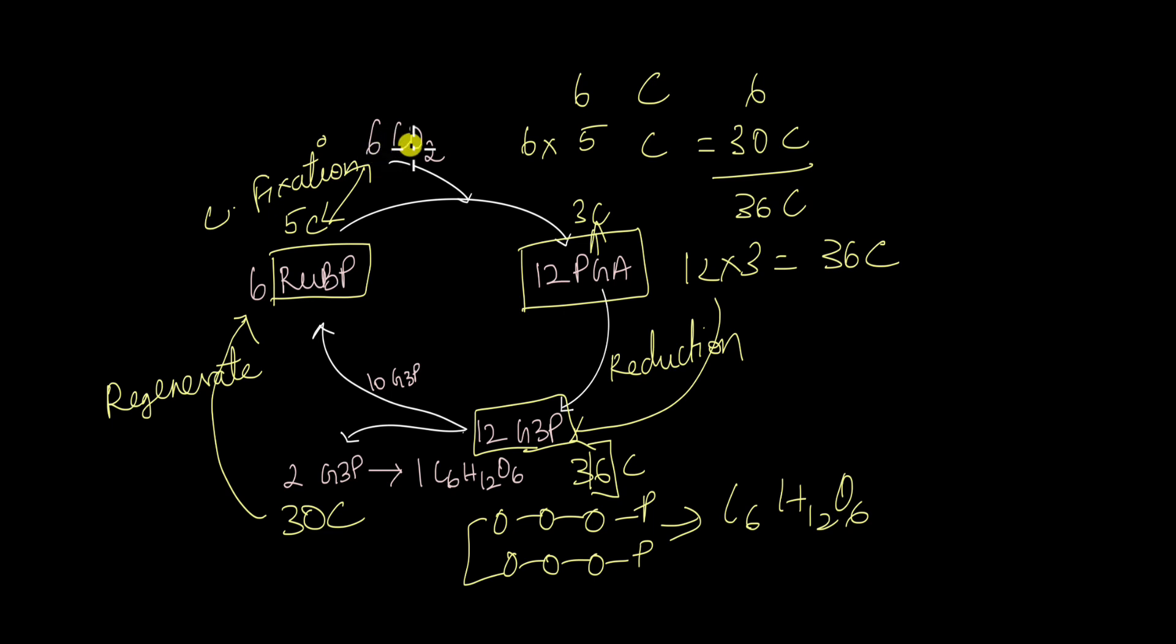Six molecules of carbon dioxide combining with six molecules of RUBP to give 12 phosphoglyceric acid molecules. And they are converted to 12 molecules of G3P out of which two molecules go ahead to form one glucose molecule. And the remaining 10 G3Ps are used to regenerate this six molecules of RUBP. We're finally ending up with 30 carbon atoms here. 10 into 3 is 30 to give back this six RUBP molecules. And this is the entire Calvin cycle reaction that involves converting carbon dioxide or fixing carbon dioxide to give glucose.